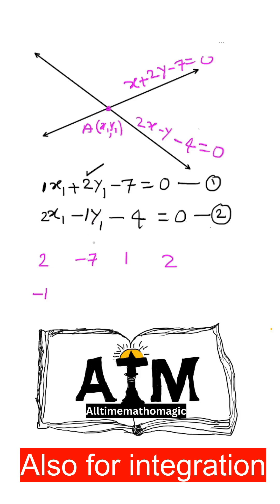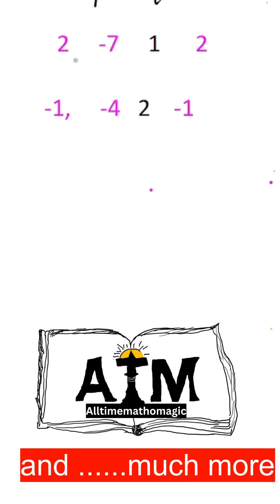After that constant term, after that X coefficient, come back to the Y coefficient that is -1. After that you mark the arrow mark like this.